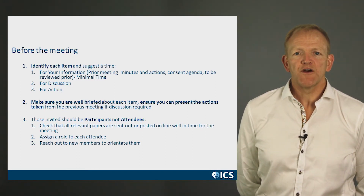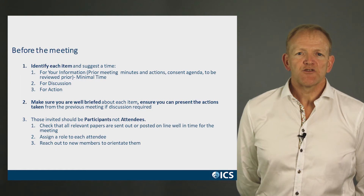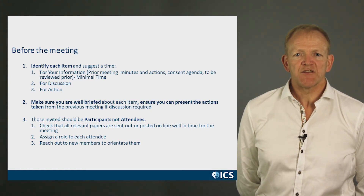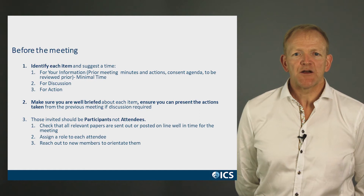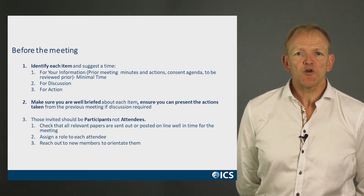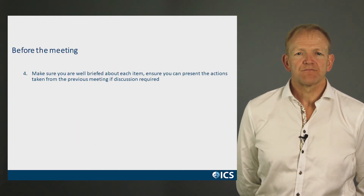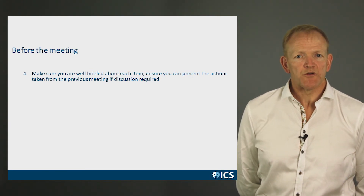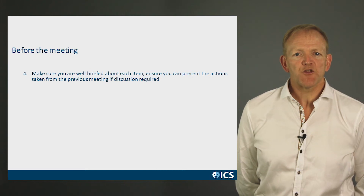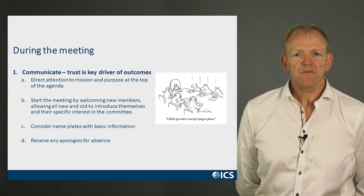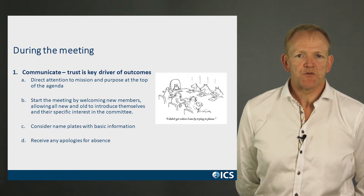Try to categorize your agenda items into those which are for information versus those that offer discussion or decision and will therefore need action. To ensure that all committee members participate in the meeting, make sure that relevant papers are sent out in good time. Reach out to new members and orientate them to the current work of the committee and its mission. Make sure that you're well briefed on all agenda items and are able to present the previous business and action items in context. At the start of the meeting, make sure that everyone is orientated to the purpose and mission of the meeting.